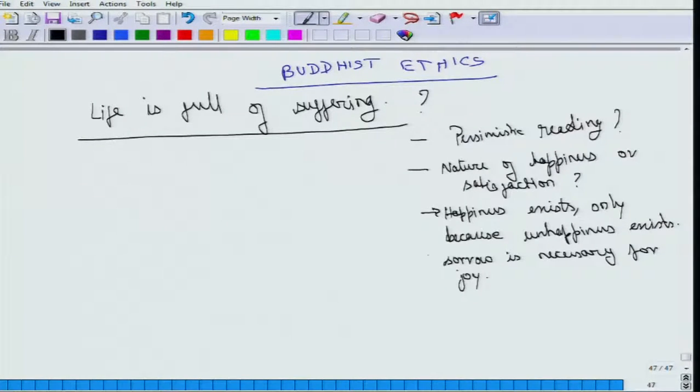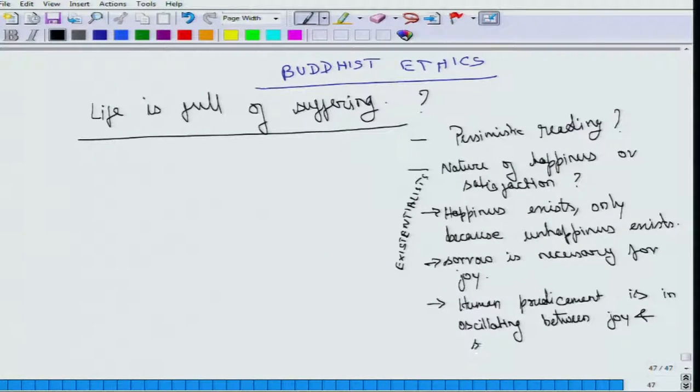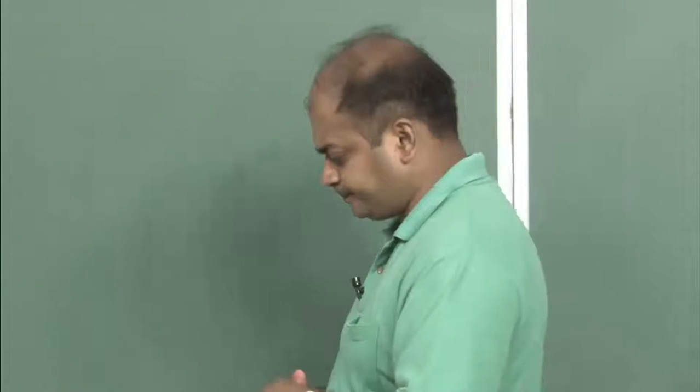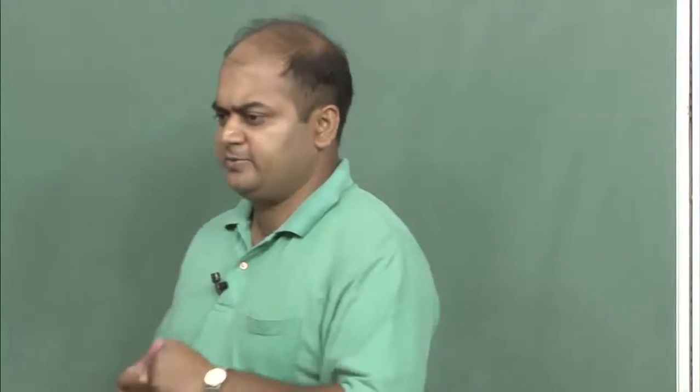This claim would claim that happiness exists only because unhappiness exists. Sorrow is necessary for joy. This school of philosophy, which could be regarded as the existentialists, or those who believe that life has to be lived, that the human predicament is in oscillating between the two extremes, between joy and sorrow. And this is what makes life meaningful.